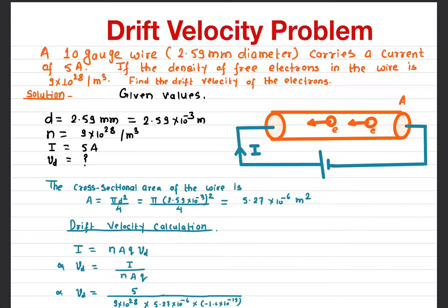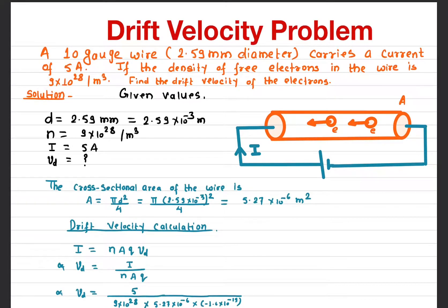So if you see any wire and it says 10 gauge wire, that means the diameter is 2.59 millimeters. The current through the wire is 5 amperes, and the density of free electrons in the wire is given as 9 times 10 to the 28 per cubic meter — meaning in one cubic meter volume you have that many electrons. That is called the density of free electrons.